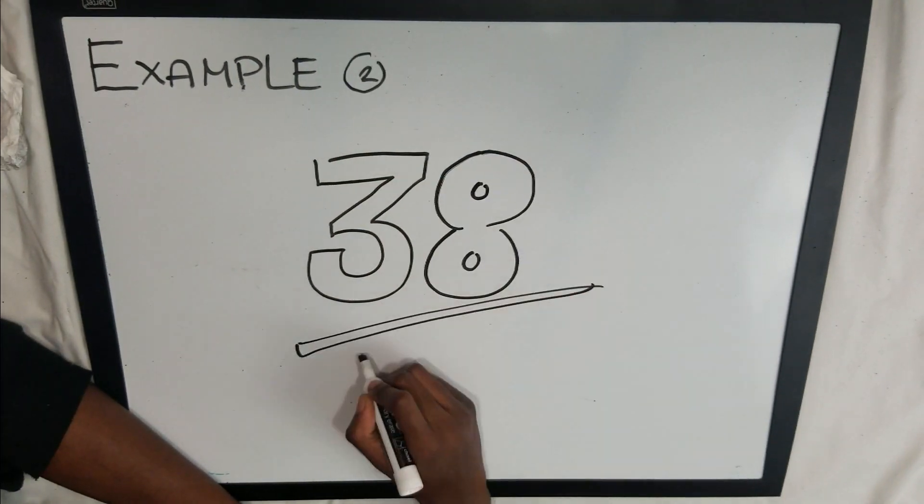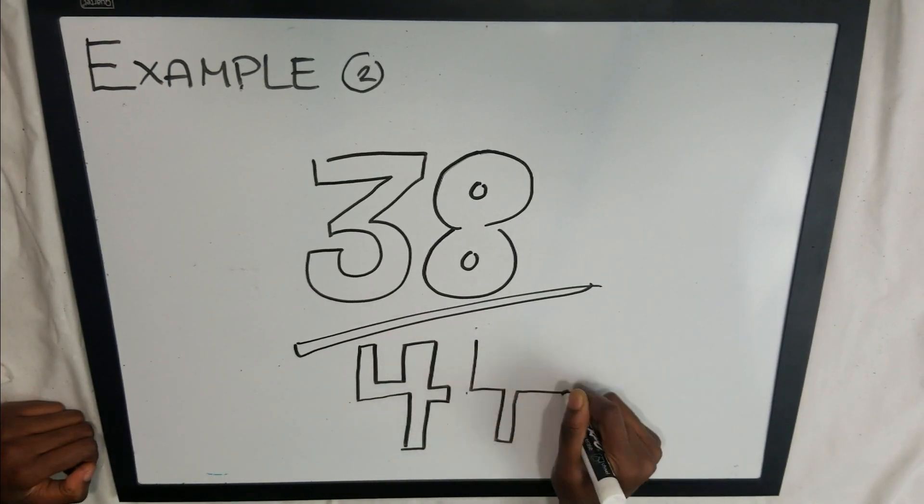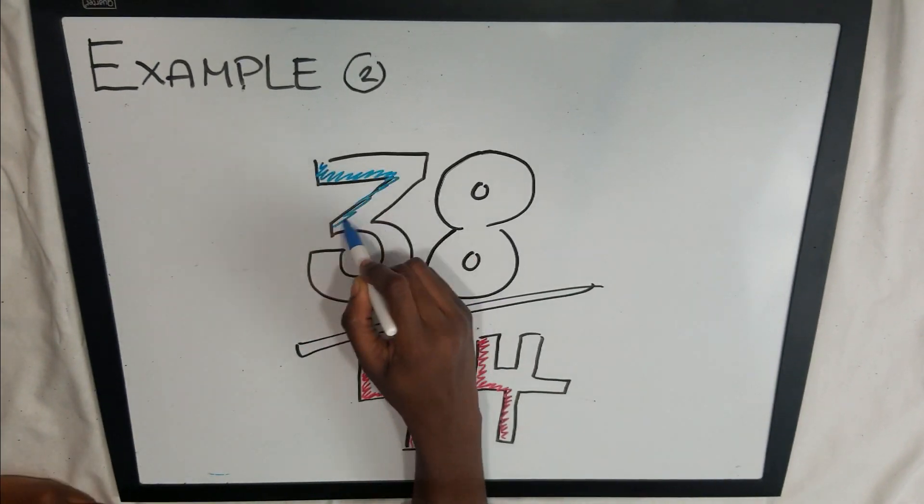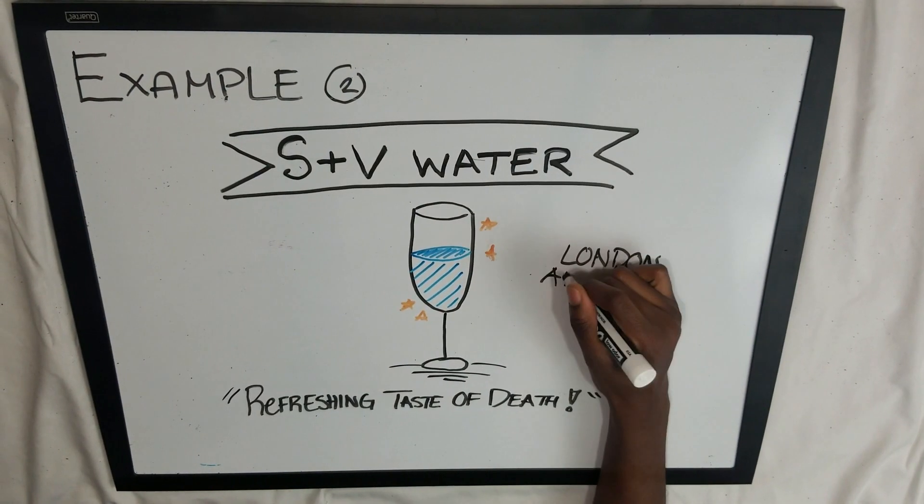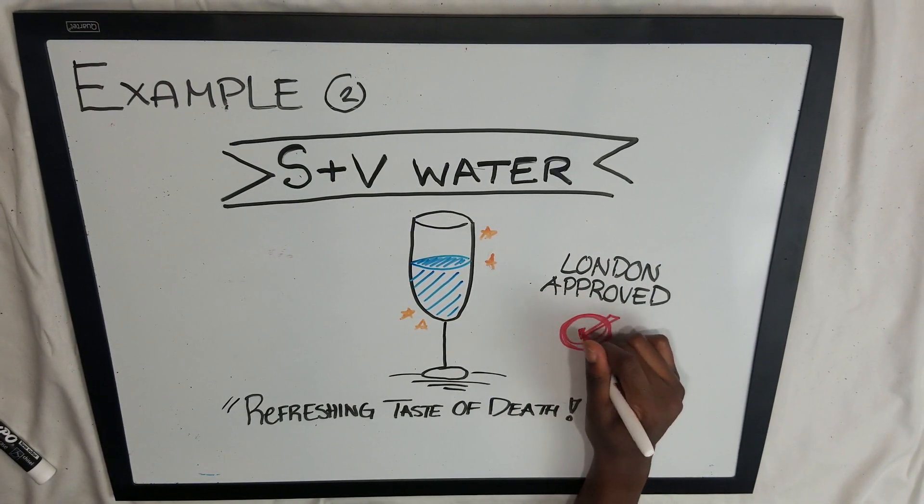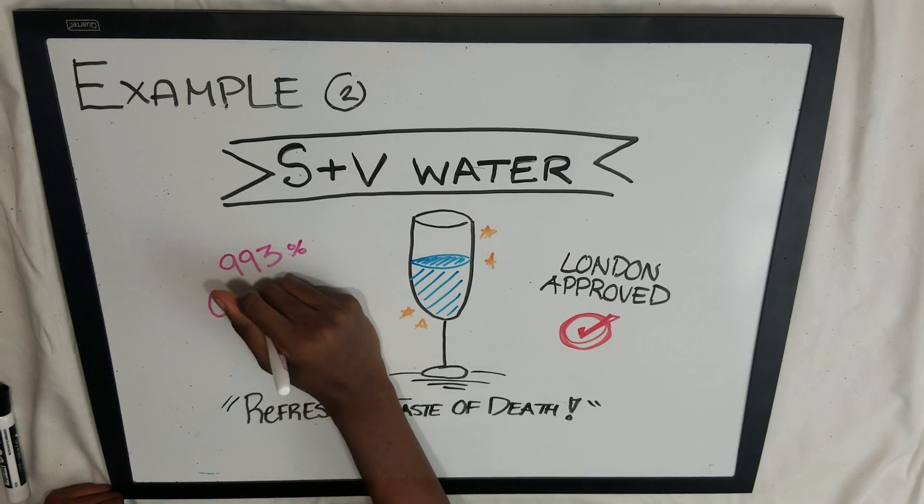His results were astonishing. He found that 38 of 44 deaths that occurred that month were from the South Street and Vauxhall water company. And you were 993% more likely to die from choosing the water company.